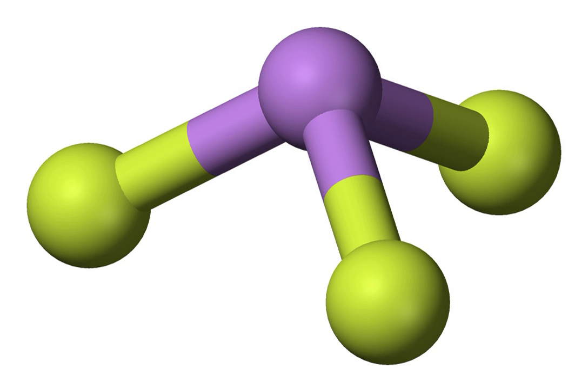6HF + As2O3 → 2ASF3 + 3H2O. It has a pyramidal molecular structure in the gas phase which is also present in the solid. In the gas phase, the AS-F bond length is 170.6 pm and the F-AS-F bond angle is 96.2 degrees.